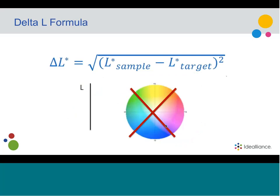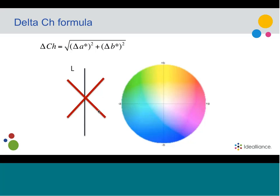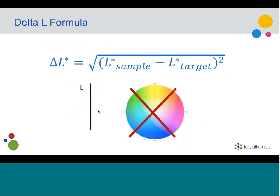The Delta L formula is exactly the opposite. On the Delta L formula, what we have is just the L — there is no A or B. That's the only thing we care about, and that's lightness. So Delta L is used for assessing tonality. Delta CH is the formula for gray balance and only cares about the color of the gray. Delta L is the formula for tonality and only cares about the L value. They're kind of broken apart from what a typical Delta E formula would be, but used for those two specific purposes.